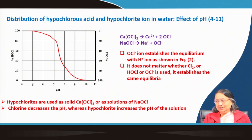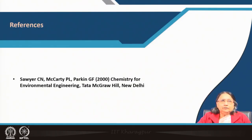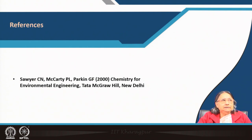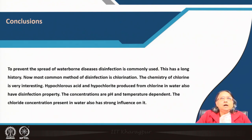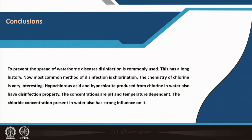For reference, the book Chemistry for Environmental Engineering by McCarty explains all these steps very elaborately. In conclusion: to prevent the spread of waterborne diseases, disinfection is commonly used and has a long history. The most common method is chlorination. The chemistry of chlorine is interesting — HOCl and OCl⁻ produced from chlorine in water also have disinfection properties. Their concentrations are pH and temperature dependent, and the chloride concentration present in water also has a strong influence. Thank you.